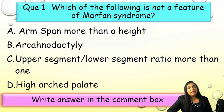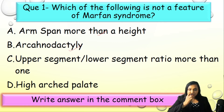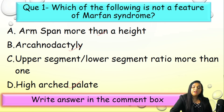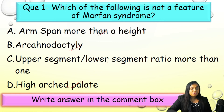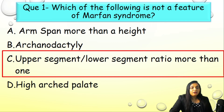Now it's trivia time. Question 1: Which of the following is NOT a feature of Marfan syndrome? Options: A) arm span more than height, B) arachnodactyly, C) upper segment to lower segment ratio more than one, or D) high arch palate. To answer this, we need to know what the upper to lower segment ratio means — if you haven't covered that, the link is in the description box.